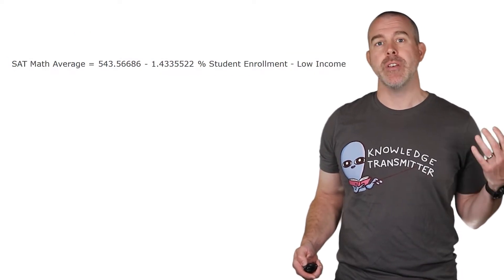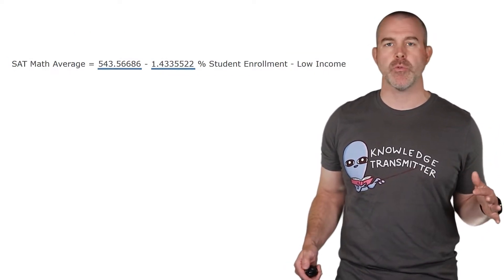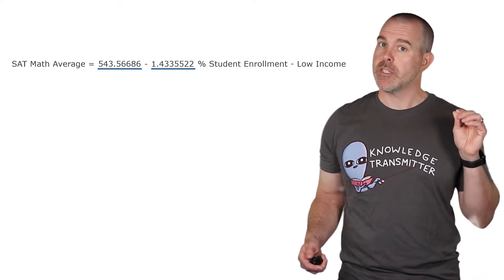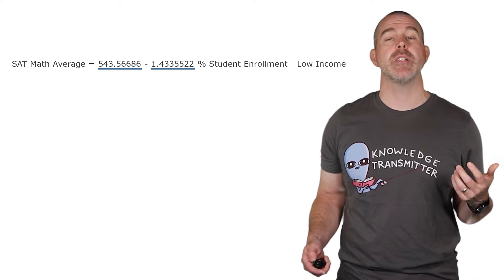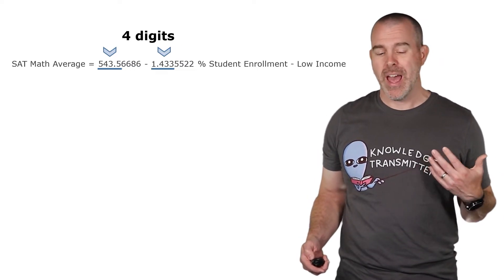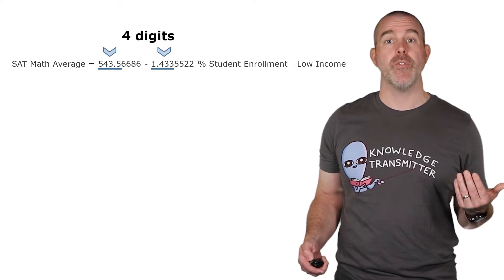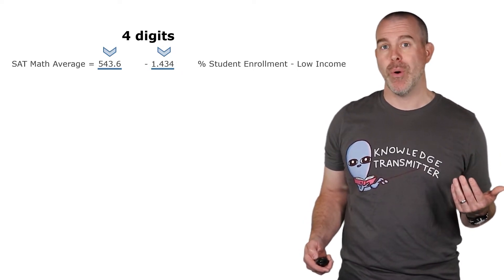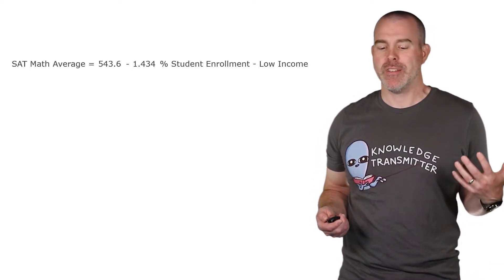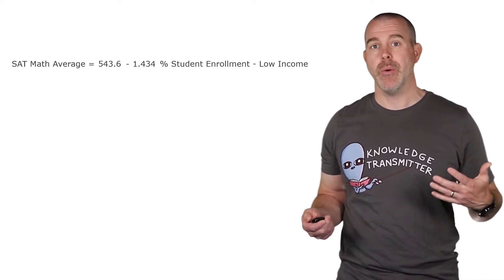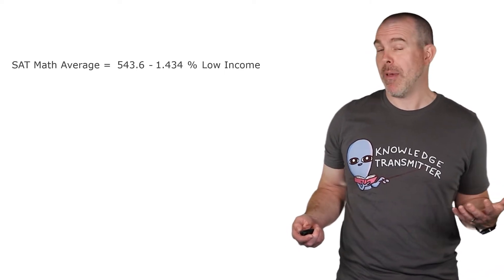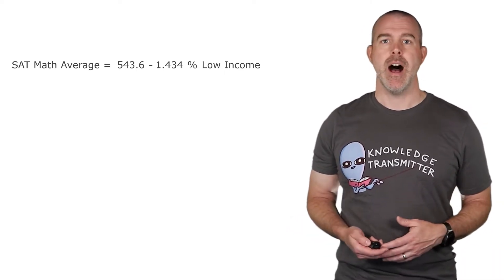Let's zoom in and focus on those numbers. We want to round them — there's no hard and fast rule, but the first number is in the hundreds and the second is around one point something, so we round to the same number of digits rather than the same decimal place. A good guide is three or four digits. Rounding to four digits gives us 543.6 and negative 1.434. We can shorten the variable name to just 'percent low income,' and now we have the equation for a line: y equals 543.6 plus negative 1.434 times percent low income.